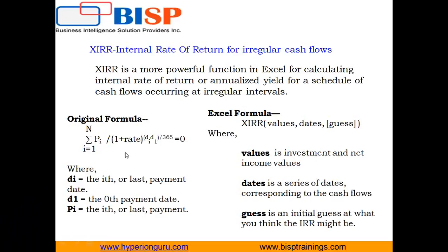When the XIRR formula value becomes zero, that gives the XIRR. In Excel, XIRR takes three arguments. The first is values — a reference to a range of cells containing the series of cash flows (investment and net income values), which must contain at least one positive and one negative value. The second argument is dates — a series of dates corresponding to the cash flows. The first date is the start of the loan or investment period and subsequent dates refer to income values, which must be later than the first date.